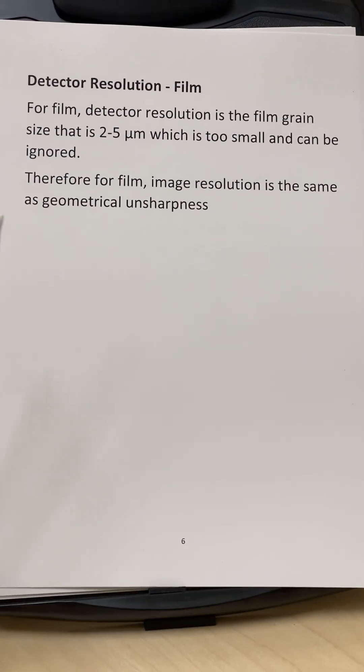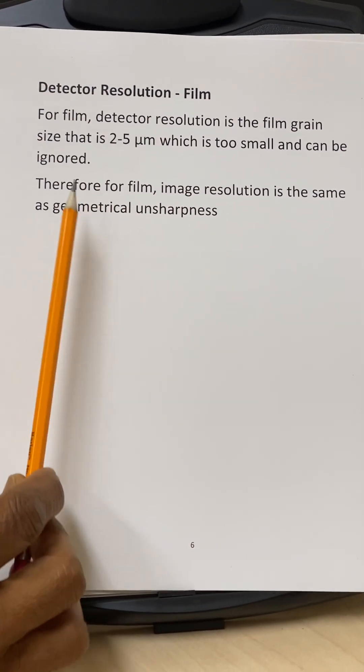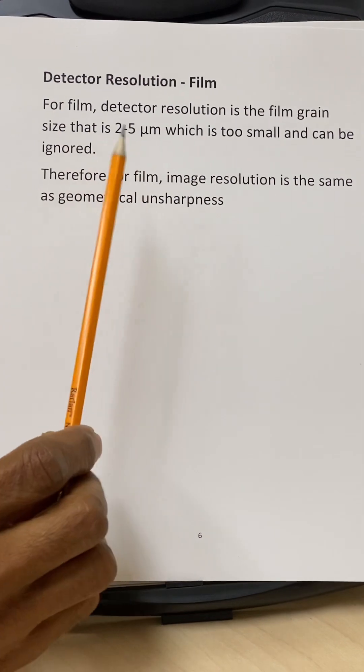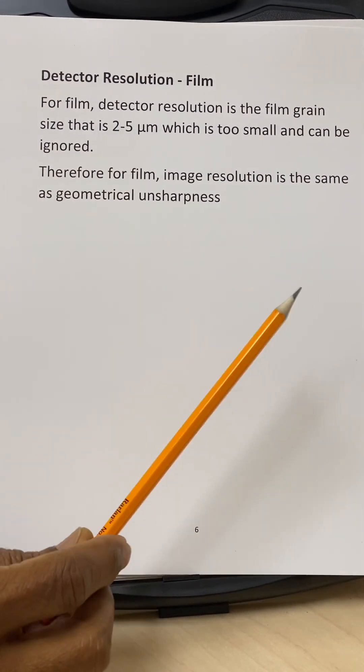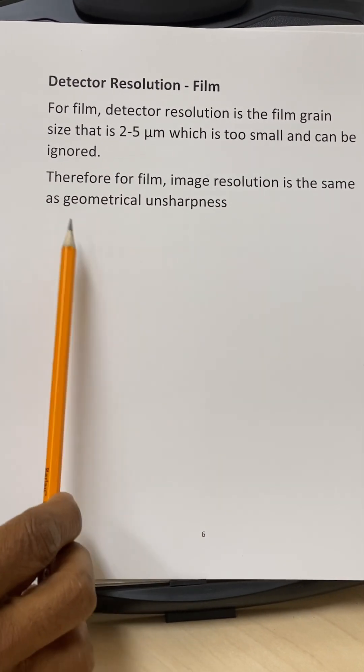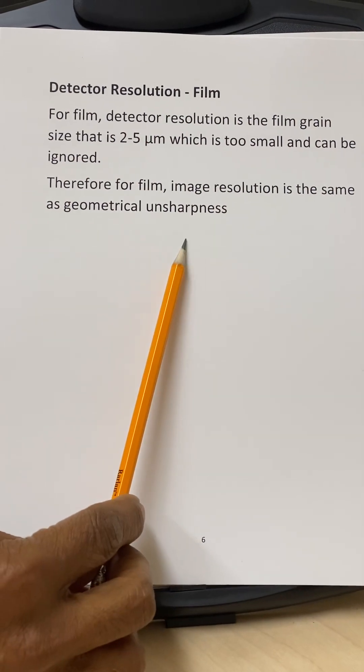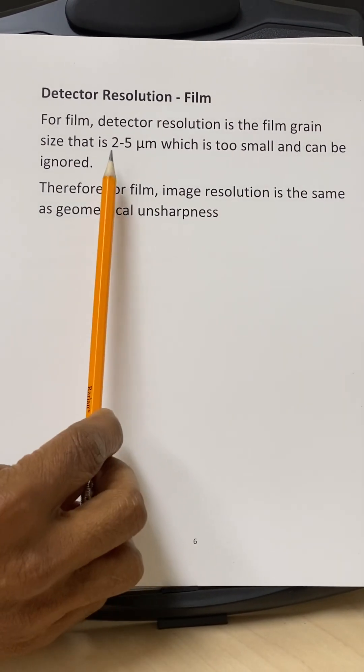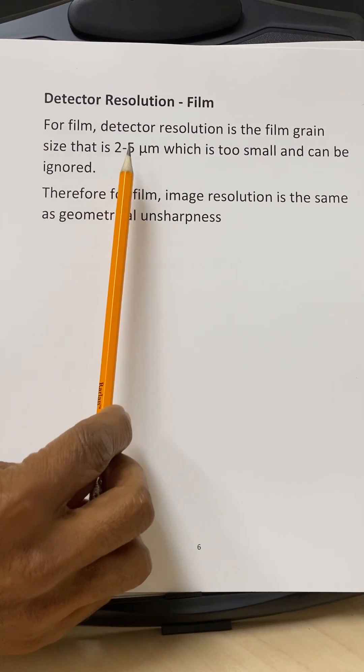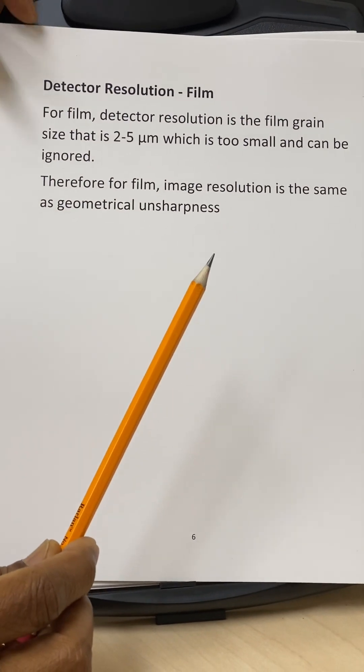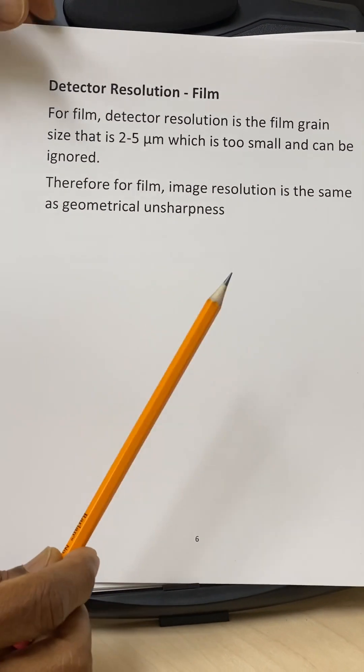So for film, the grain size for the film is about two to five microns. So in case of the film, the image resolution is the same as the geometrical unsharpness. And we basically ignore this two to five micron grain size in determining the image spatial resolution.